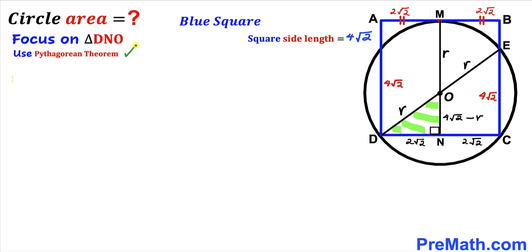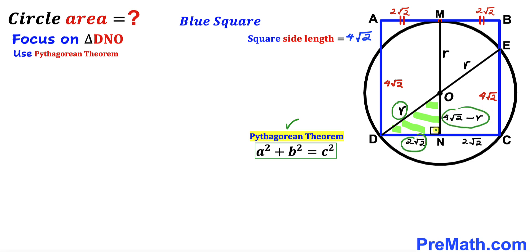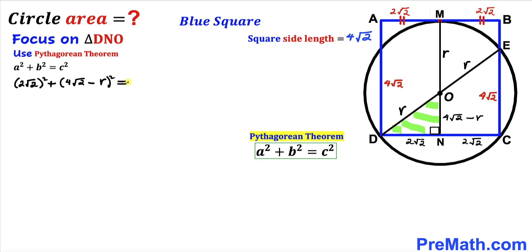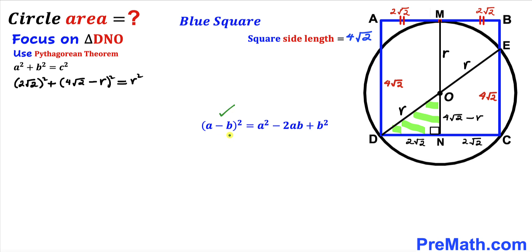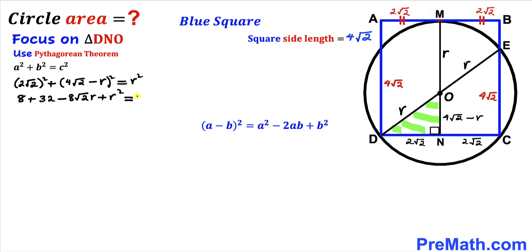Applying the Pythagorean theorem a² + b² = c² on triangle DNO, where the hypotenuse is r: (2√2)² + (4√2 − r)² = r². Expanding using the identity (a − b)² = a² − 2ab + b², this gives 8 + 32 − 8√2·r + r² = r².